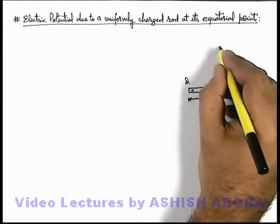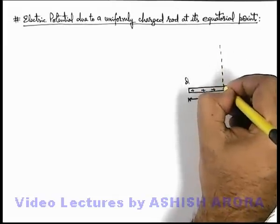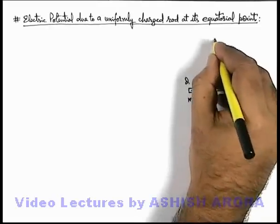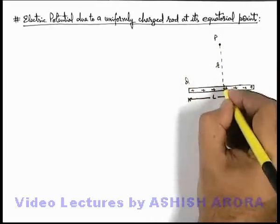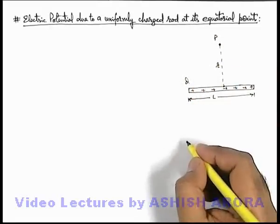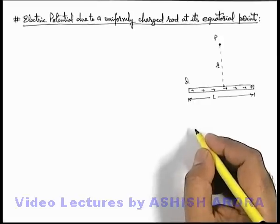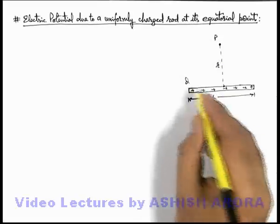On its perpendicular bisector, which is also termed as equator, there is a point P located at a distance r from the center of this rod. We are required to find the electric potential at point P due to this rod.